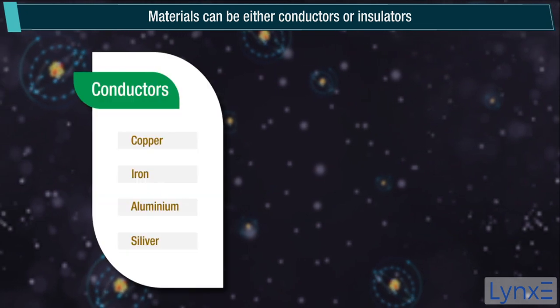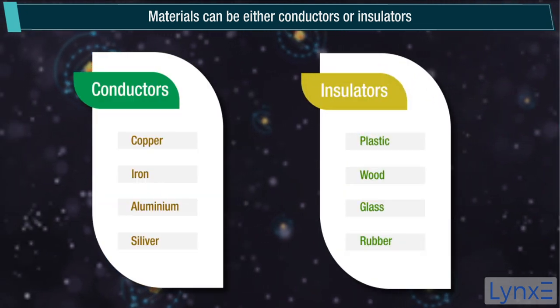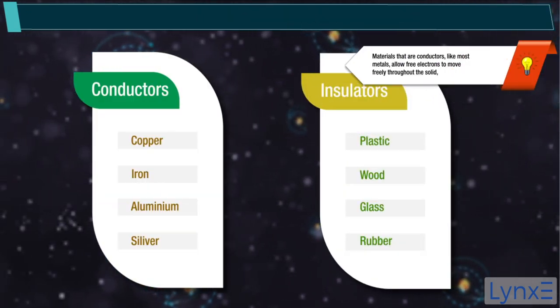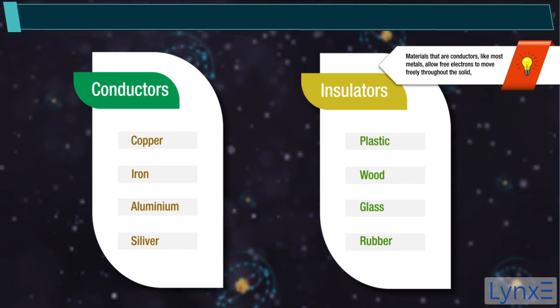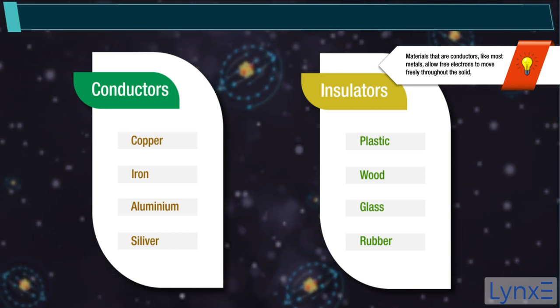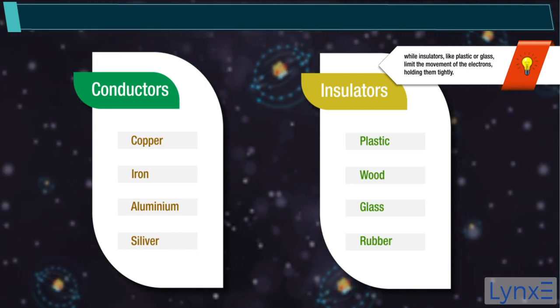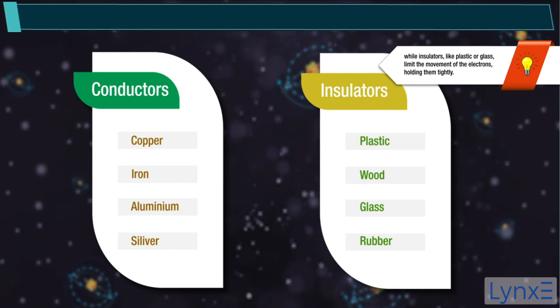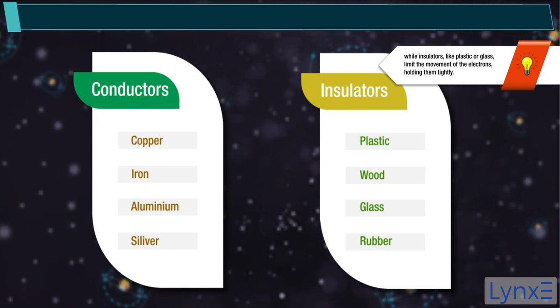Materials can be either conductors or insulators. Note, materials that are conductors like most metals allow free electrons to move freely throughout the solid. While insulators like plastic or glass limit the movement of the electrons, holding them tightly.